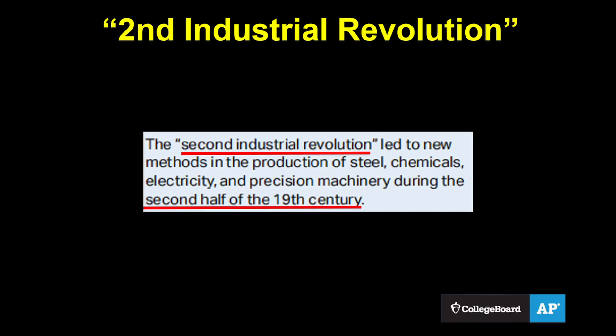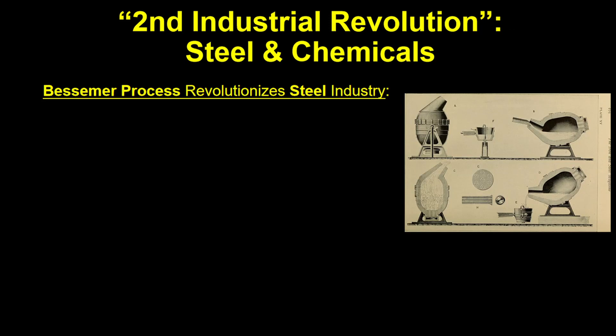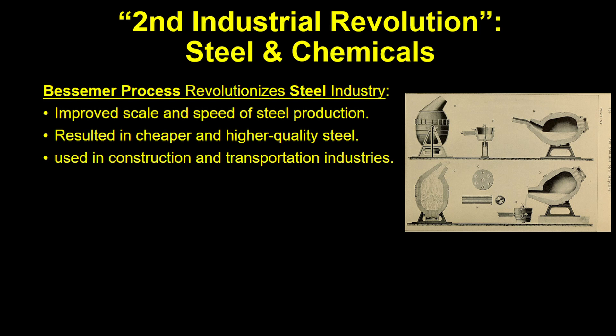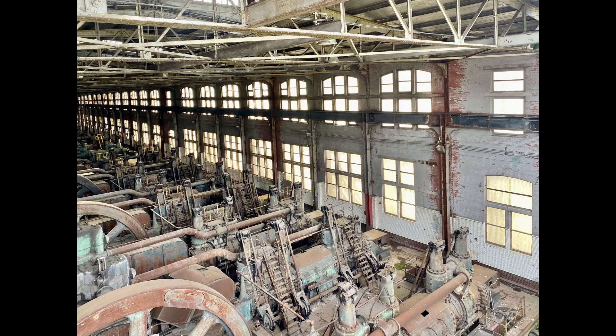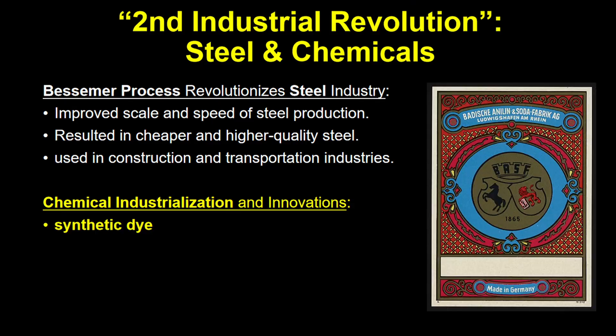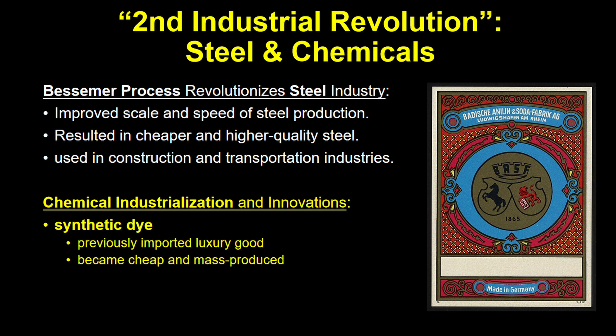Now onto the second industrial revolution that occurred in the second half of the 19th century. The steel industry was revolutionized by the invention of the Bessemer process, which greatly improved the scale and speed of steel production. The steel was also both cheaper and higher quality. Steel was used in construction and transportation industries, allowing for the creation of skyscrapers, cars, and ever more powerful and efficient machinery. Chemical industrialization also occurred with innovations like synthetic dye. Previously dyes had been imported as luxury items, but now could be made cheaply and at large scales.